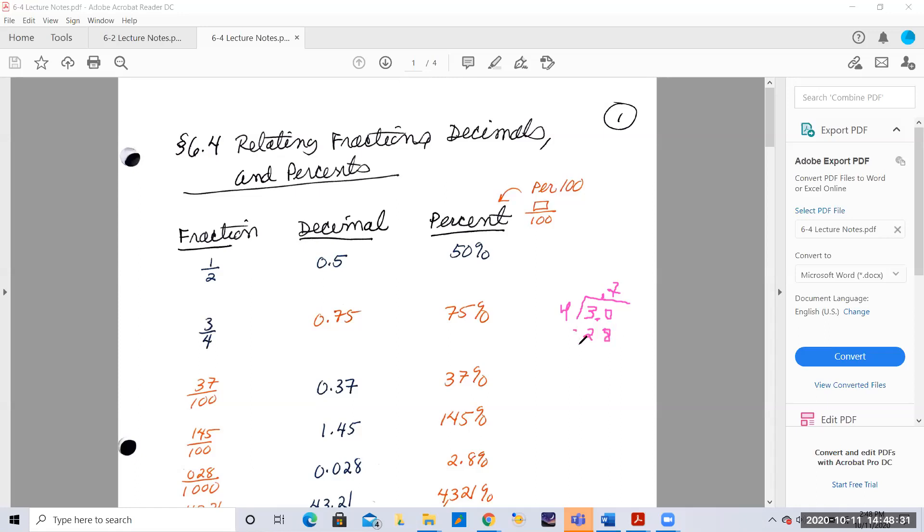And you subtract that, and you're left with two. Four won't go into two, so you have to add another zero.